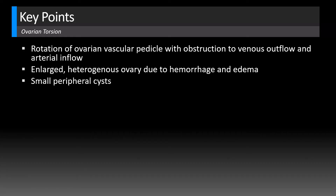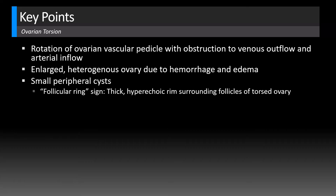You may wonder how to differentiate this appearance from polycystic ovarian syndrome, because that can give you a string-of-pearls appearance of small peripheral follicles. In that case, however, the ovaries will not be heterogeneous — they'll be normal in morphology with a prominent echogenic central stroma, without hemorrhage and edema altering the morphology. Additionally, with torsion you often see the follicular ring sign: a thick hyperechoic rim surrounding the follicles, something you won't see in the contralateral normal ovary.